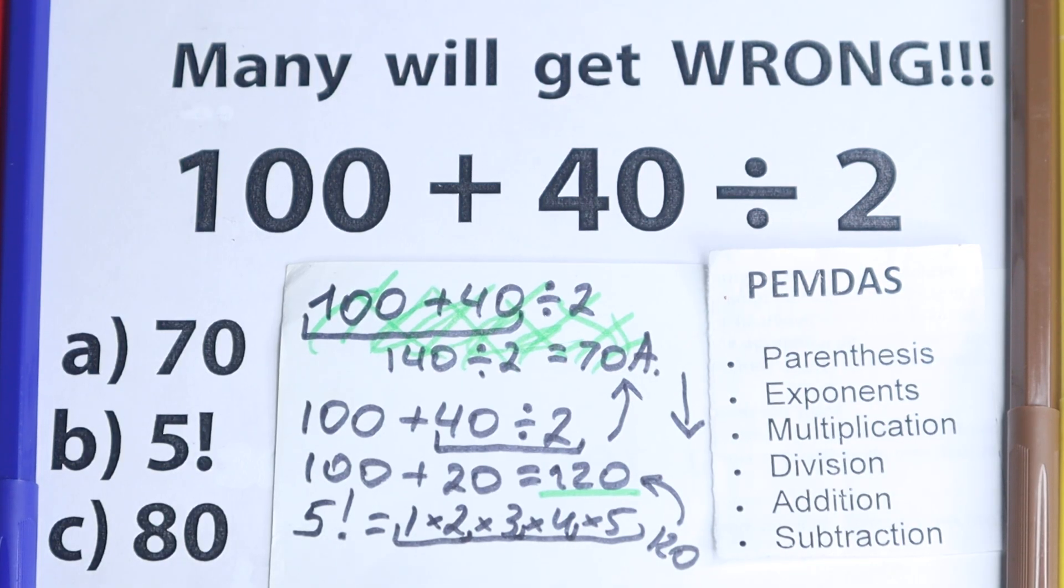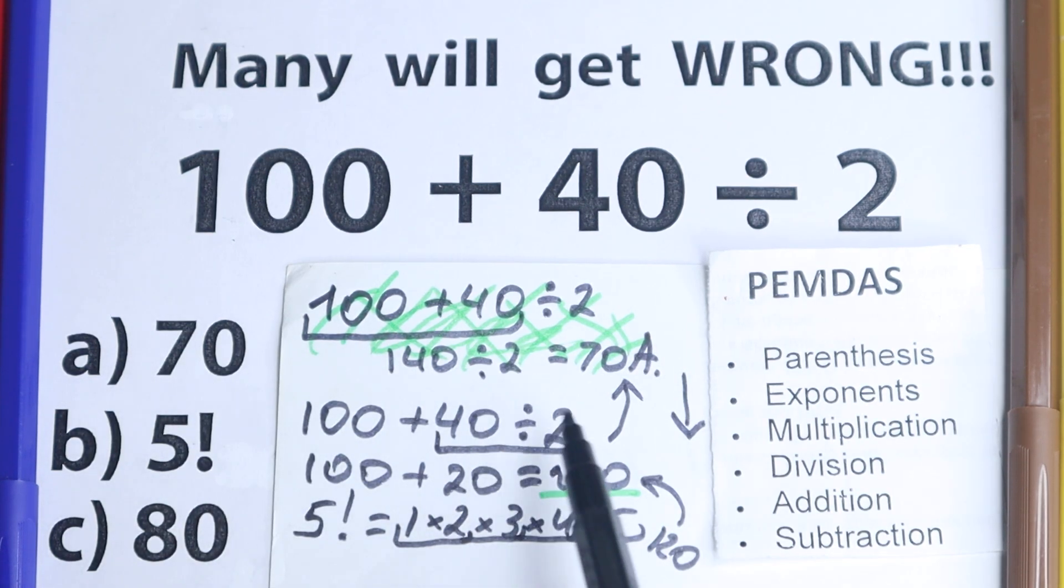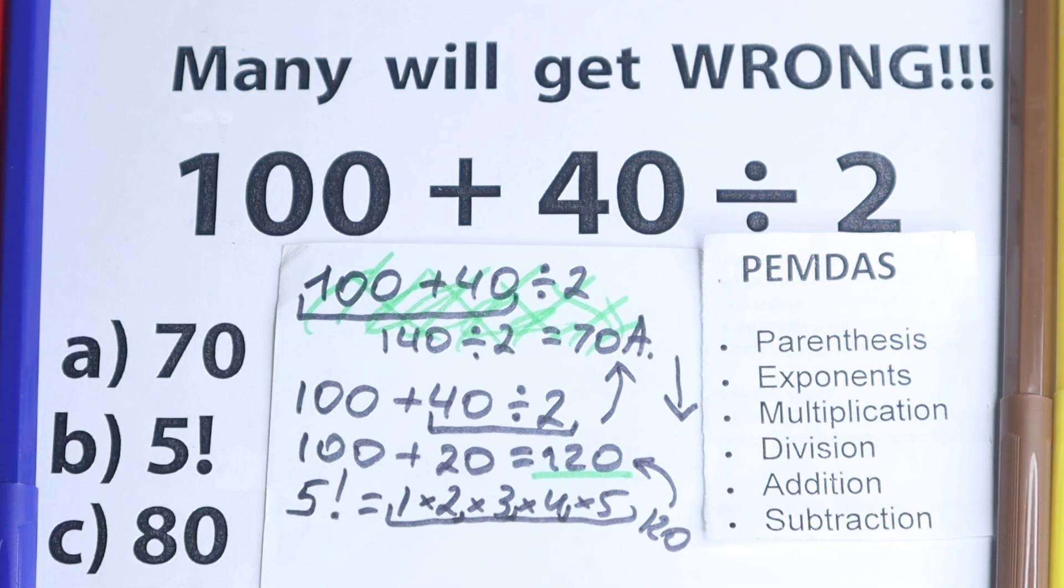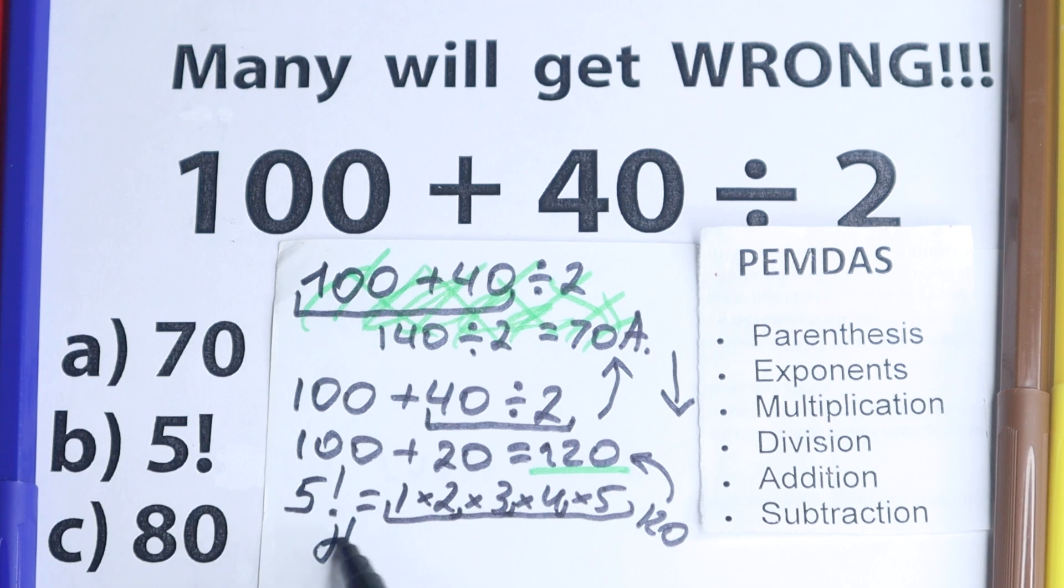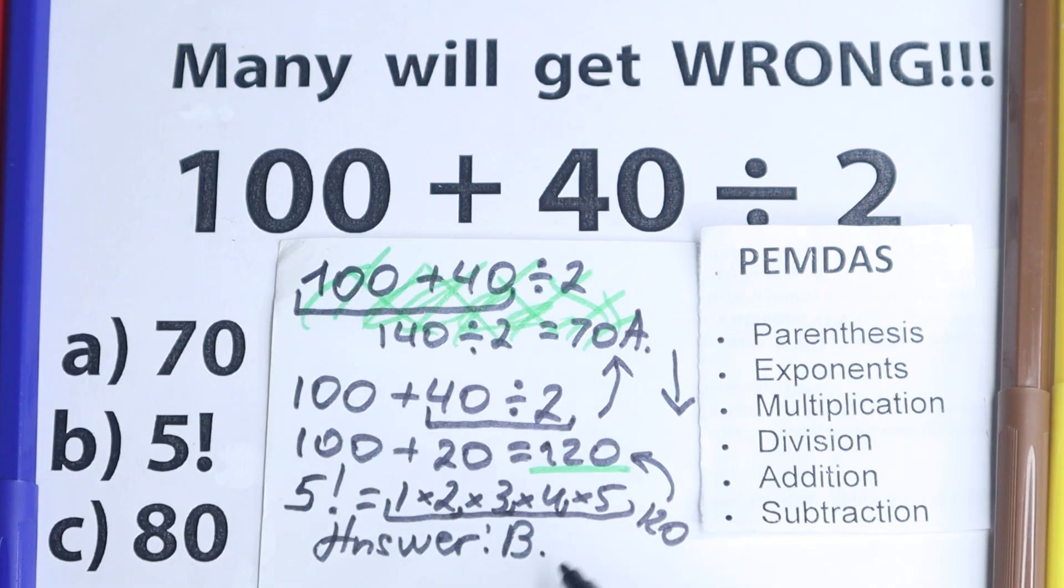So very tricky moment. Don't forget about factorials, because if you forget it, you can easily go to a wrong answer. Because you don't see this correct answer and you go back to this 70, which is absolutely incorrect. And in our case, option B is the correct answer. 5 factorial, or if you're talking about the solution, this is 120.